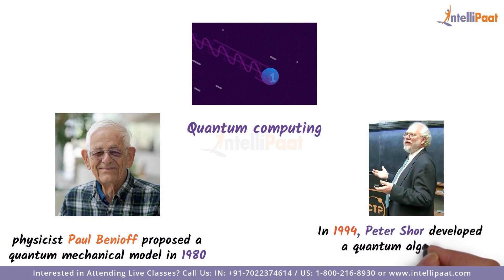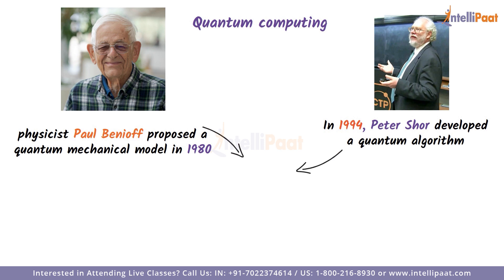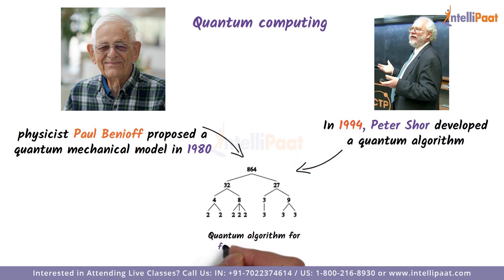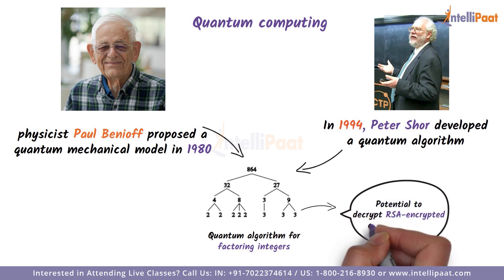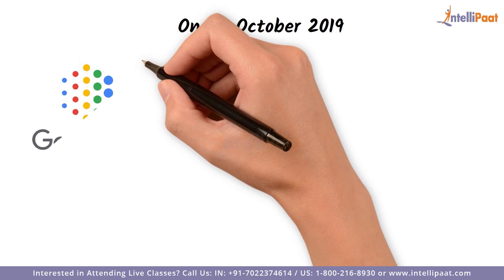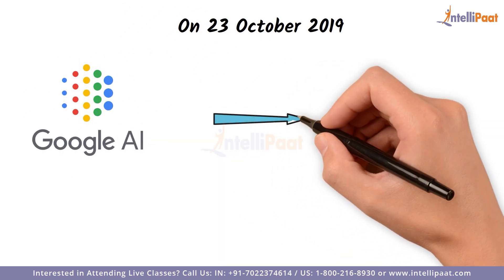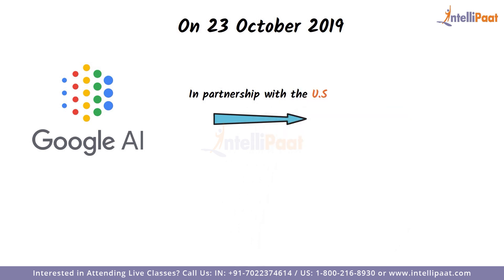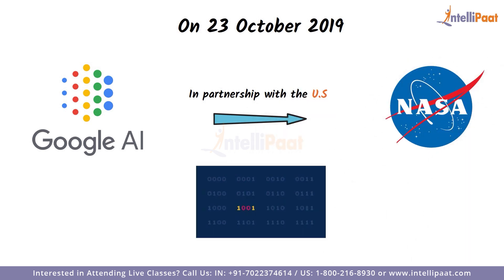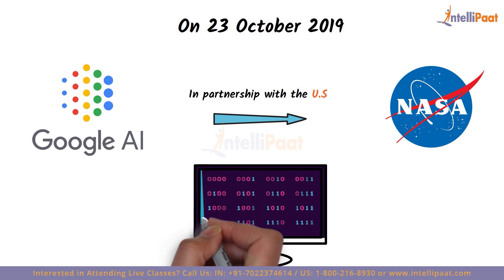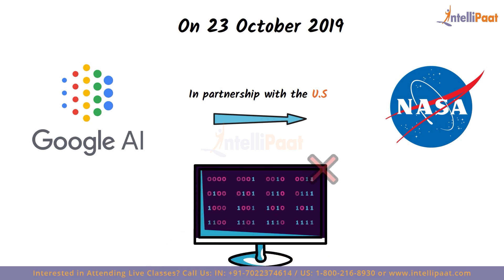In 1994, Peter Shor developed a quantum algorithm for factoring integers with the potential to decrypt RSA encrypted communications. On 23rd October 2019, Google AI in partnership with the US National Aeronautics and Space Administration, NASA, claimed to have performed a quantum computation that was infeasible on any classical computer.